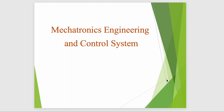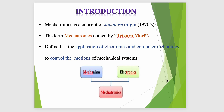We are going to discuss the topic of mechatronics engineering and its control system. Mechatronics is a concept which comes from Japan in the early 1970s. There was one scientist, Testo Mori, who in 1960 was working in a Yamaha company. He developed the concept bridging mechanical and electrical devices — this was the starting phase of automation.